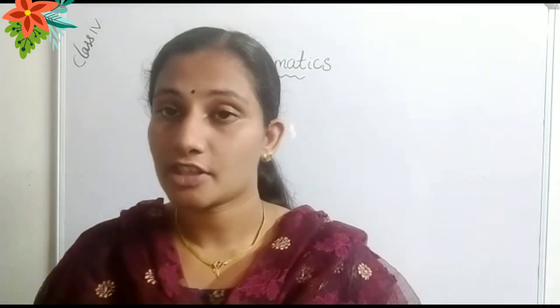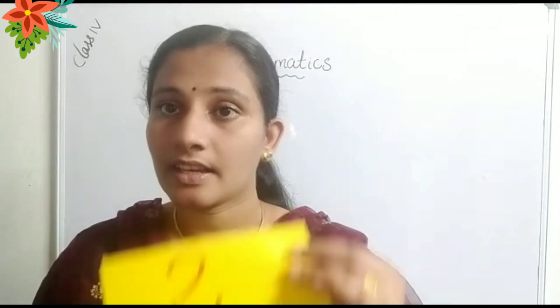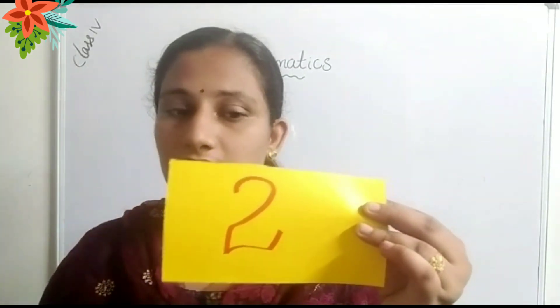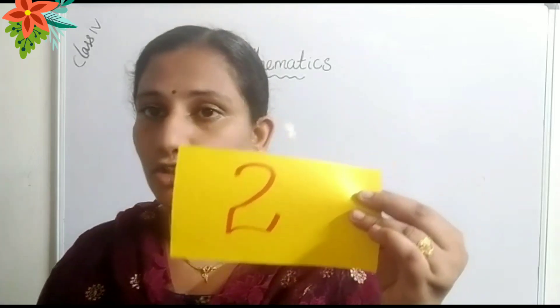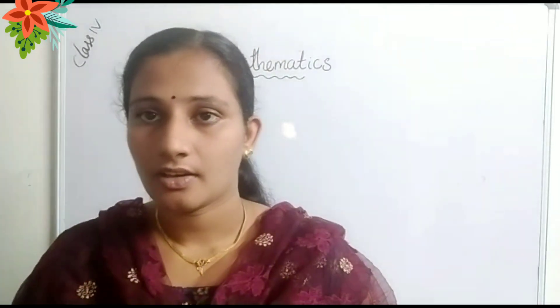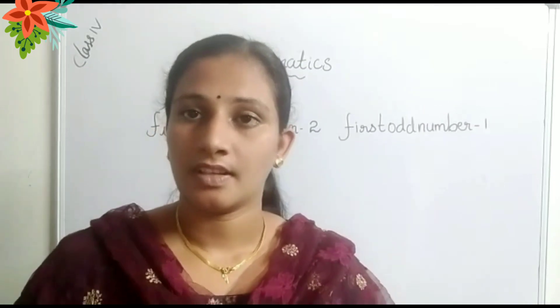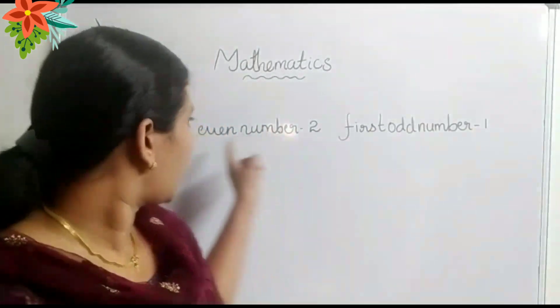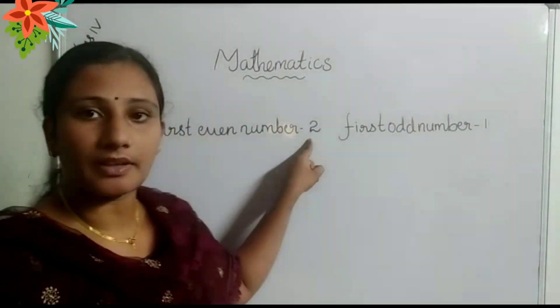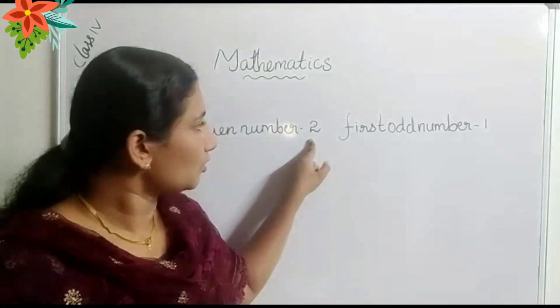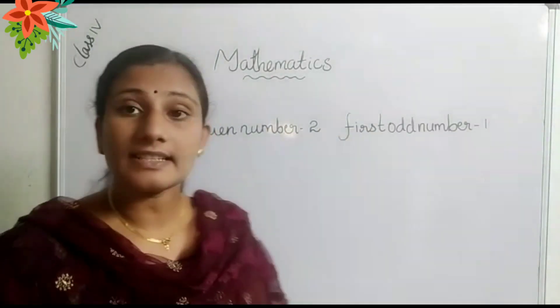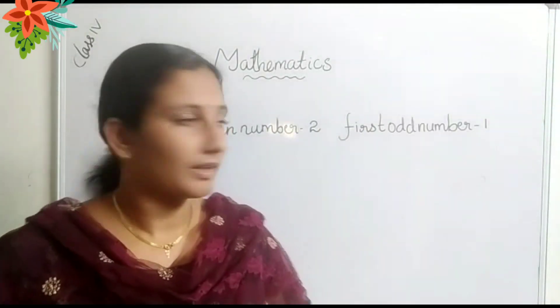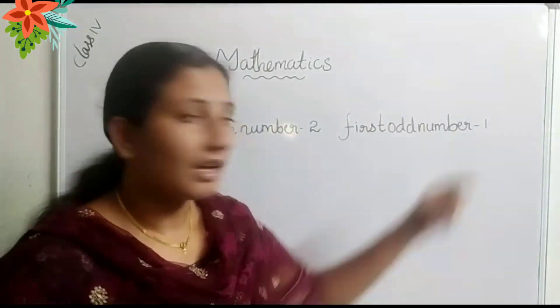Which one is the first even number? Even numbers start with 2 and odd numbers start with 1. So I write here: first even number is 2, and first odd number is 1.